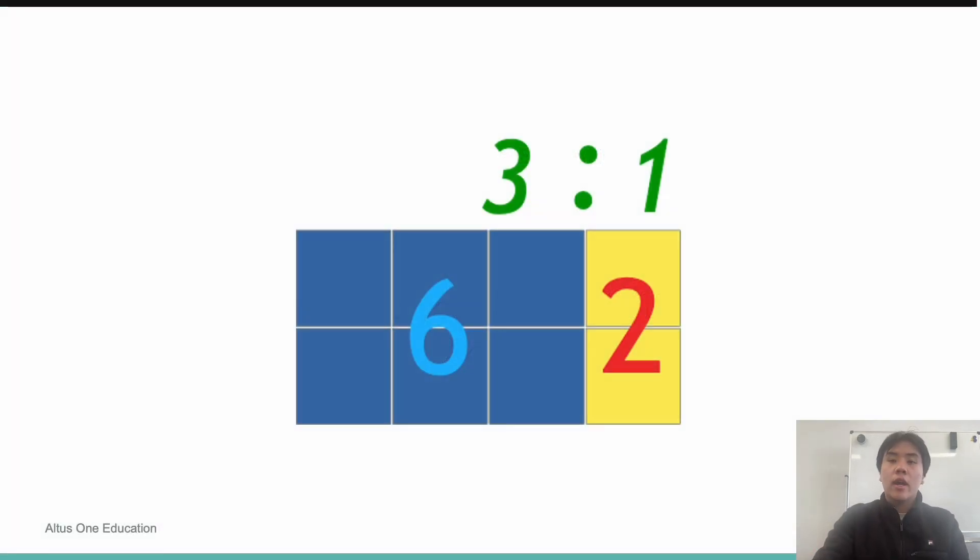Ratios are essentially our way of describing the quantity of something compared to something else. In this example, I have six blue blocks for every two yellow blocks. I can simplify that down to three blocks for every one yellow block. Therefore, our way of describing the ratio of blue blocks to yellow blocks is three to one.